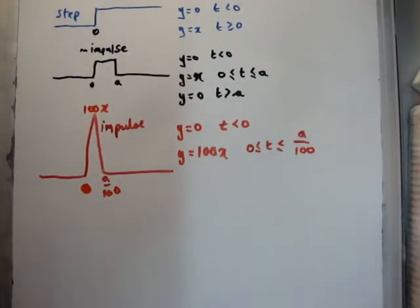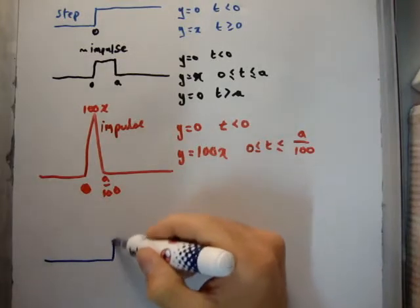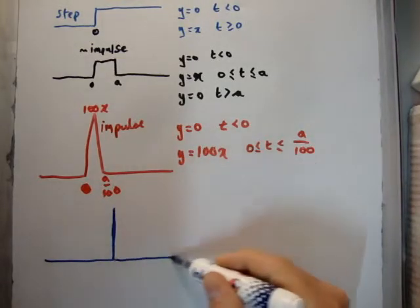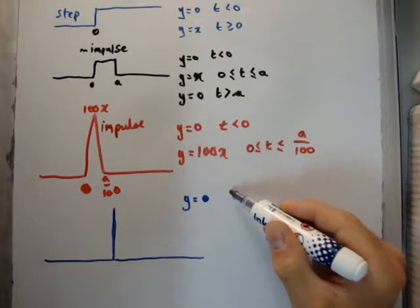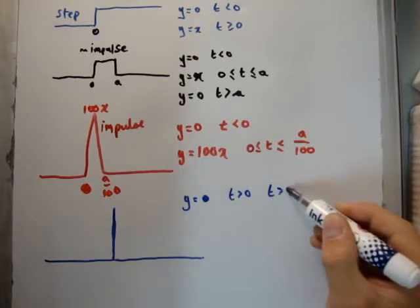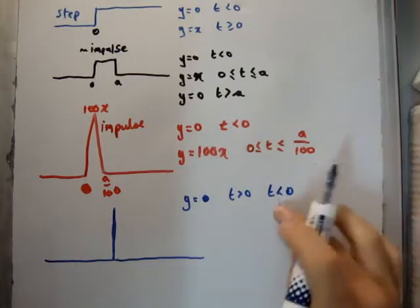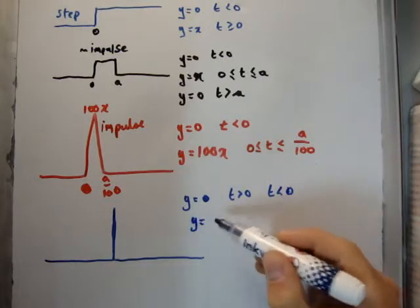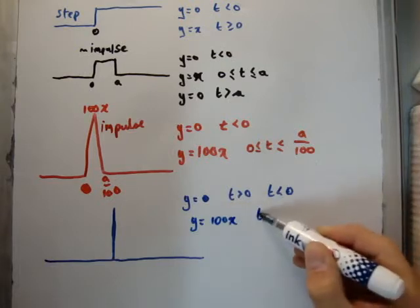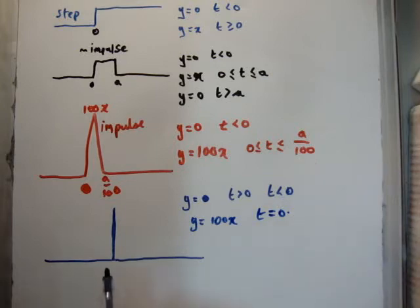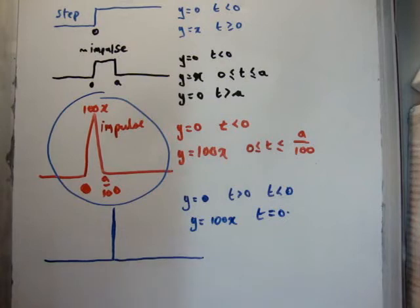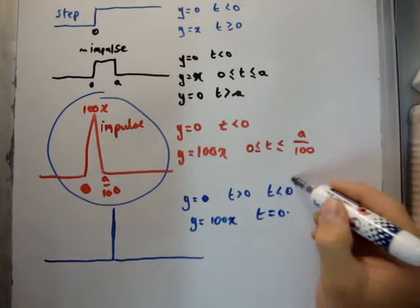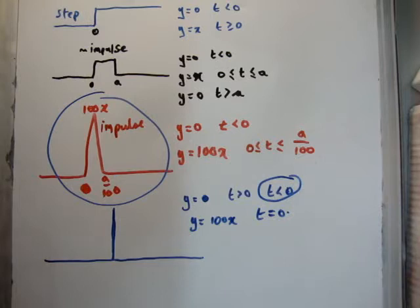We can generalize this to an actual theoretical impulse: y would be zero for t less than zero and for t greater than zero, but at the origin y would be, let's say, 100x, only at t equal to zero. So it only exists at the origin. In reality, this is the closest we'll ever get to an impulse — this kind of thing can't exist for lots of reasons, because at t equal to zero it has no duration, I suppose you could say that.